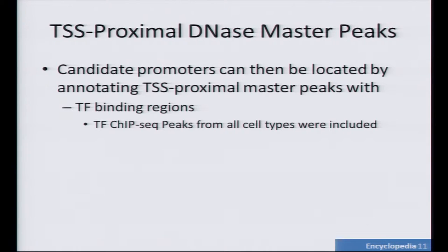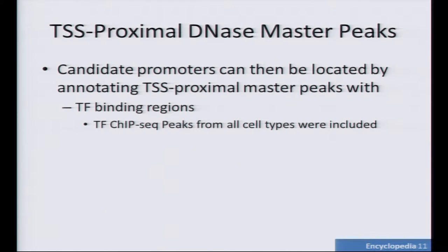Now we can actually start looking at annotating candidate promoters. For us, a candidate promoter is going to be two things: first, a TSS proximal master peak; and second, it's going to have an annotation with a TF binding site. For now, we use all the ChIP-seq TFs — all either gap peak or narrow peak — from ENCODE. We did a large bedtools merge and built an annotation track, and these peaks are also TSS proximal.